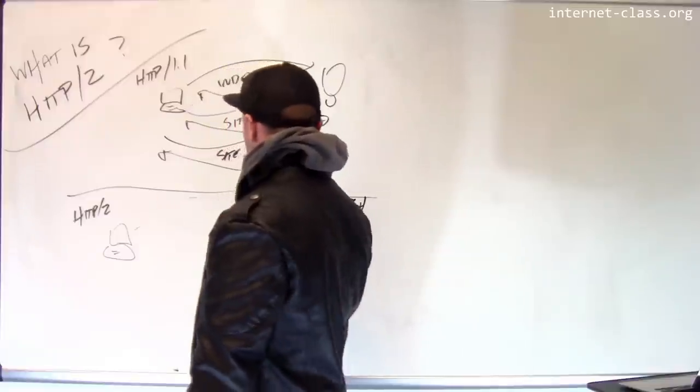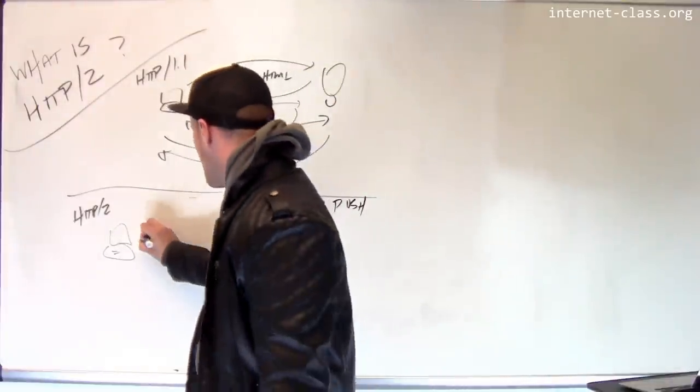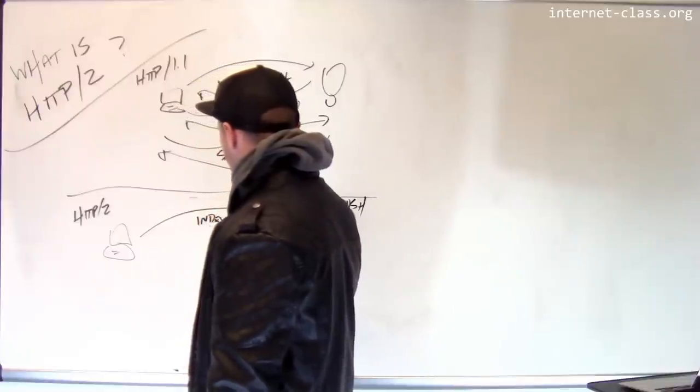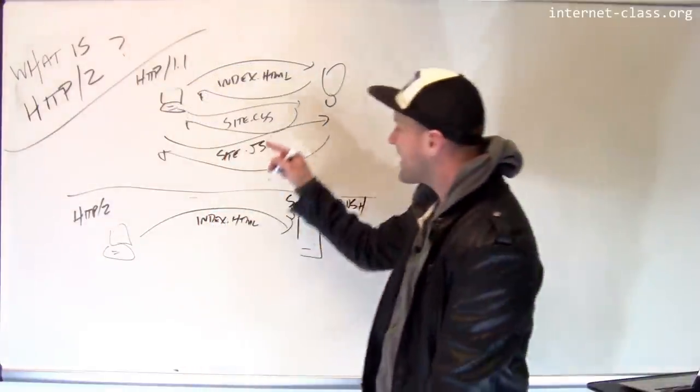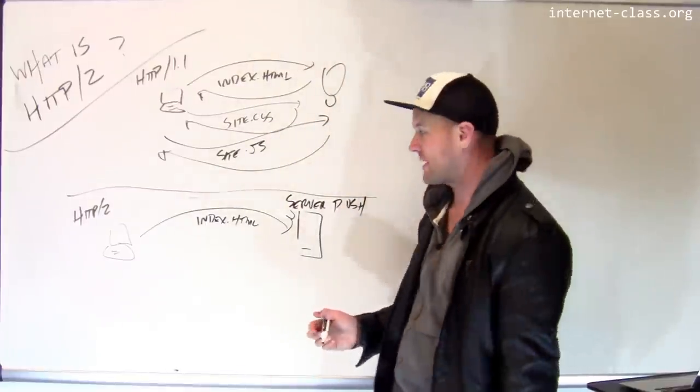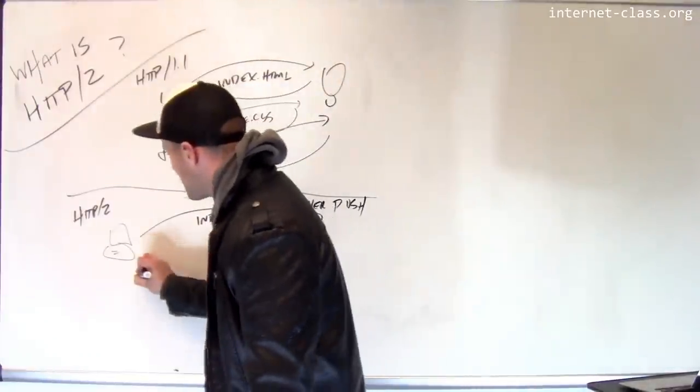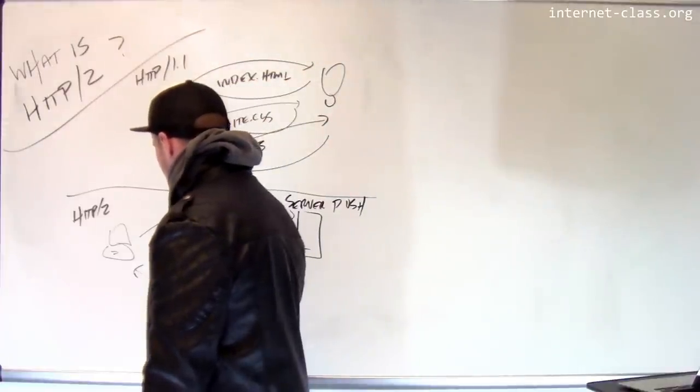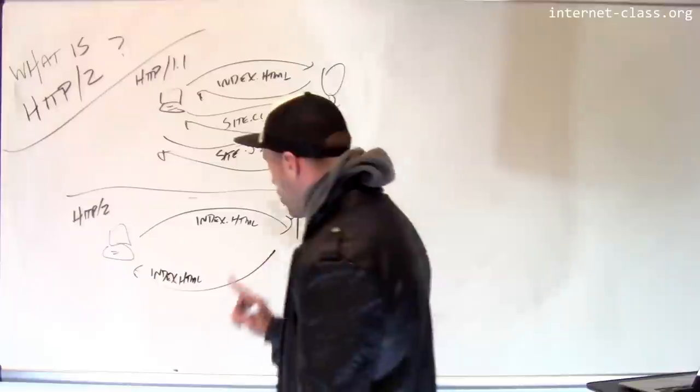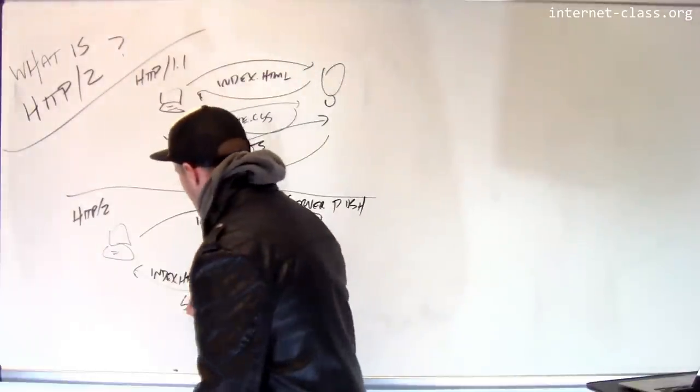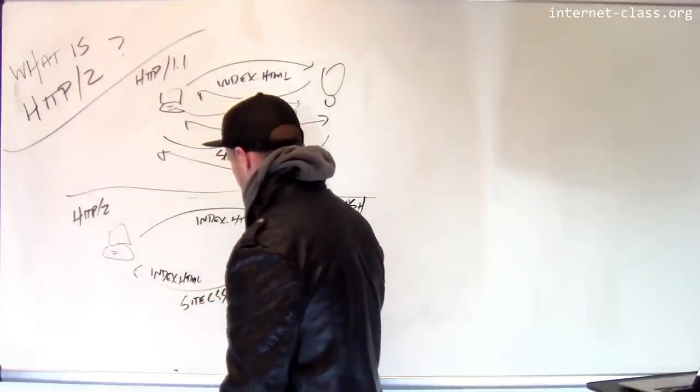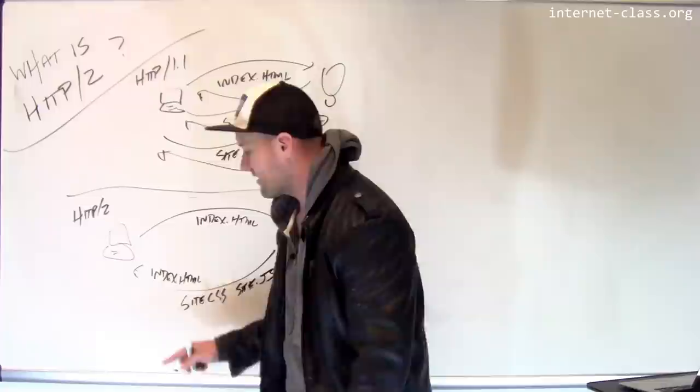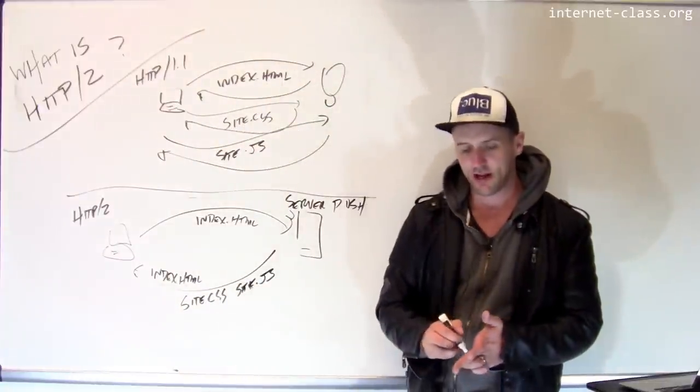All over a single connection to avoid these issues with TCP, I go to the server and I request index.html. But the server knows that I need the CSS and the JavaScript and other resources required by this page. So rather than just sending me index.html and making me ask for all that other stuff, it sends me index.html and then it pushes the other resources at me. This is the server push part. It sends on the same wire site.js and site.css and maybe there's images that this page needs.